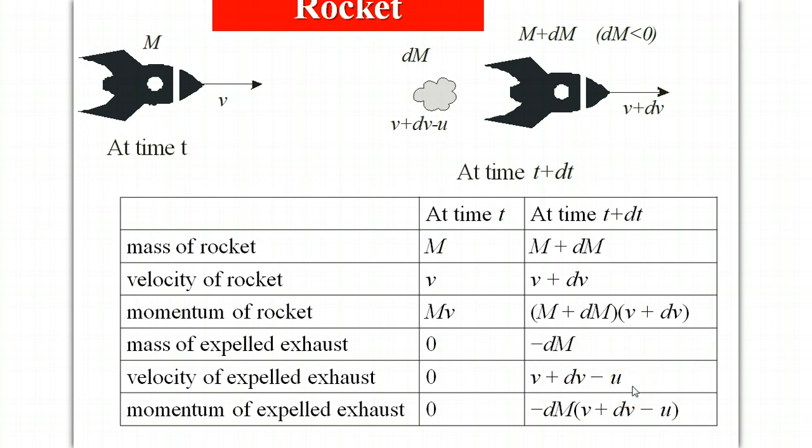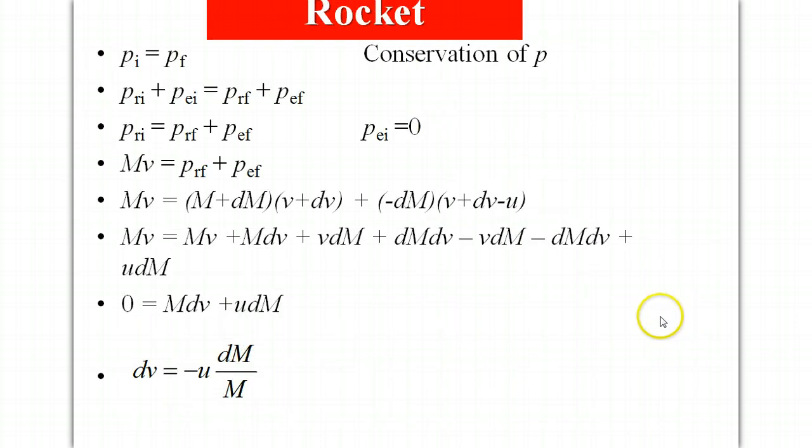The speed of the exhaust relative to the rocket, and so the mass of the expelled gas is the product of these two quantities and so what we want to do is set the total momentum of the system before equal the total momentum system after.